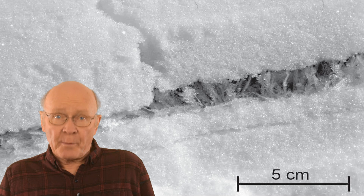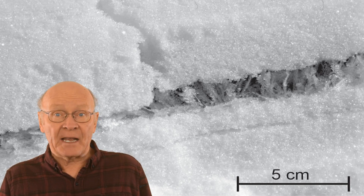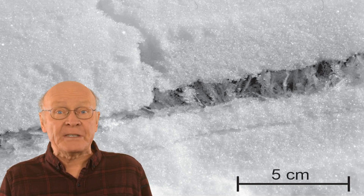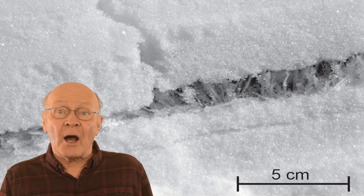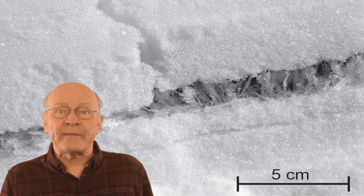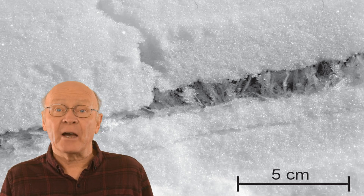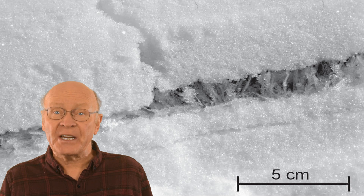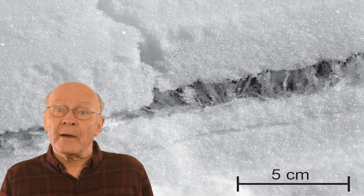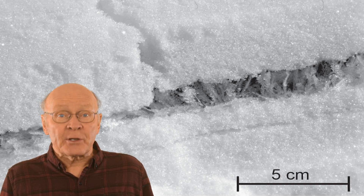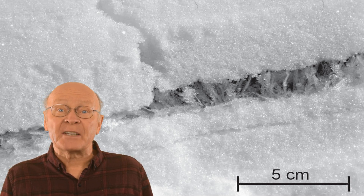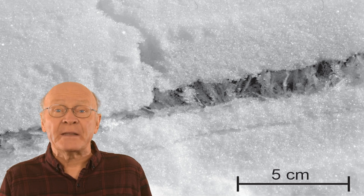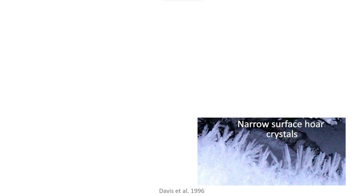During the many fracture-line profiles of slab avalanches that were released on surface oar, ASARC researchers most often found layers of wedges and never found layers of narrow surface oar crystals like needles, spikes, or sheaths. Of course, just because they didn't observe any slab avalanches released on narrow forms of surface oar does not mean that it doesn't happen or can't happen.